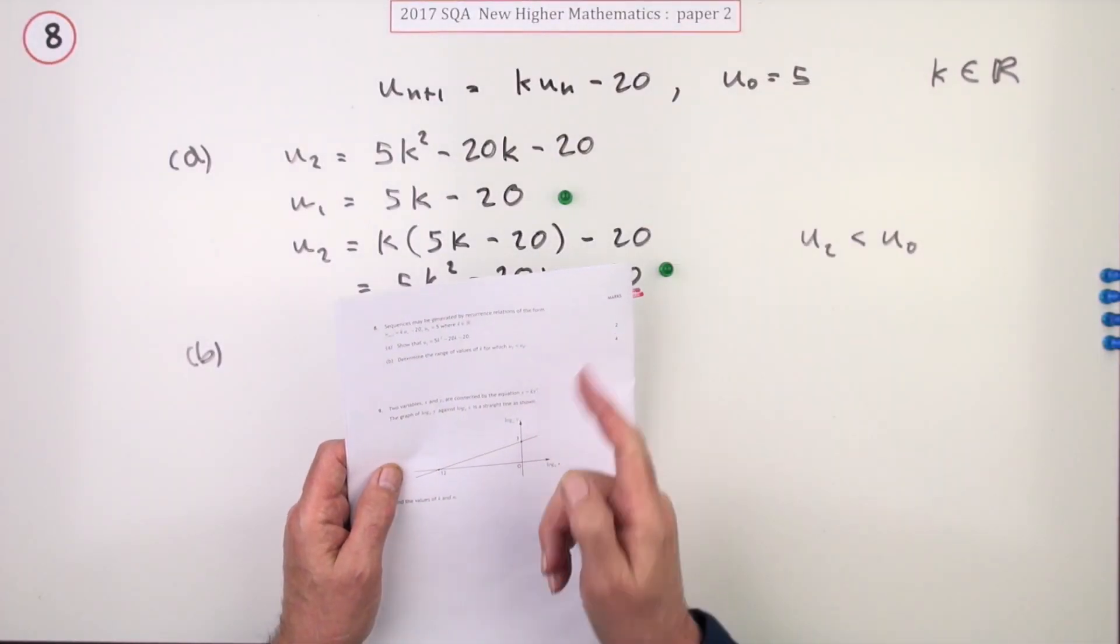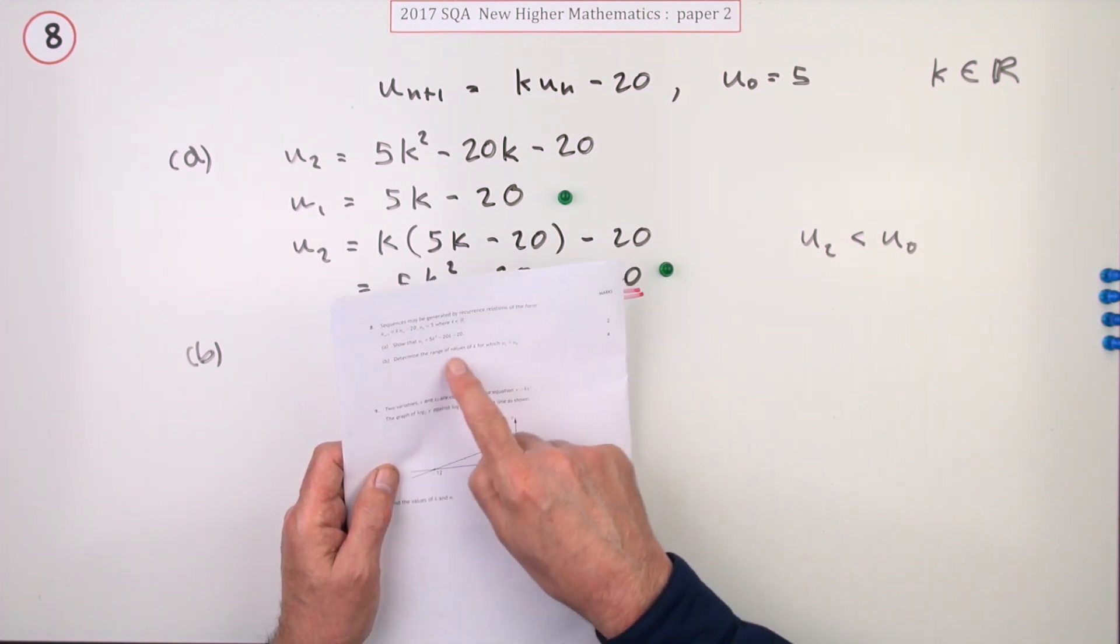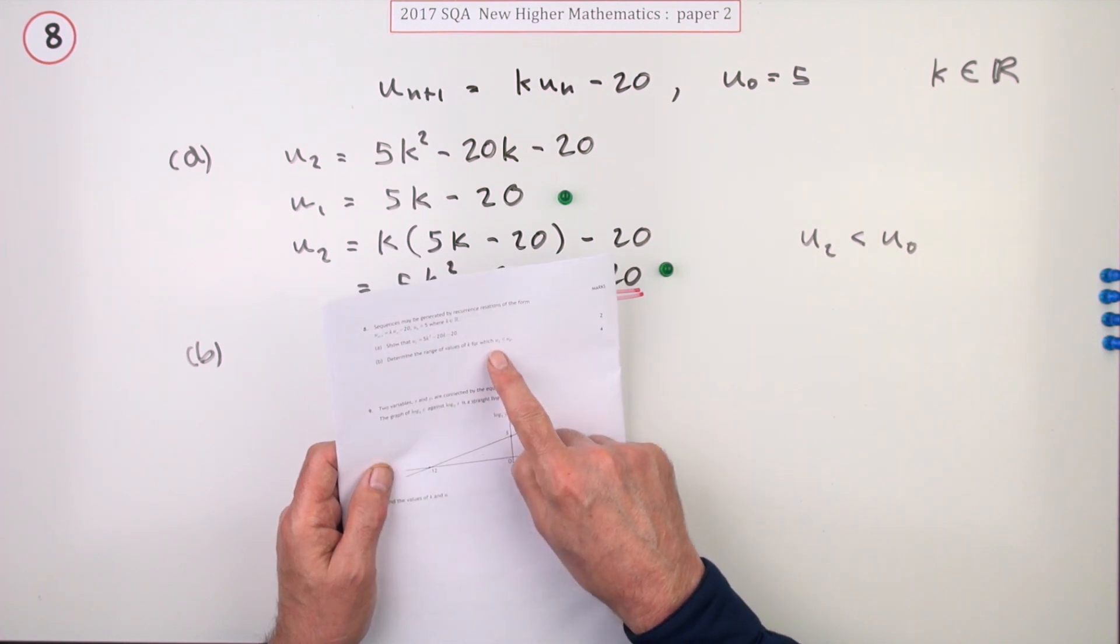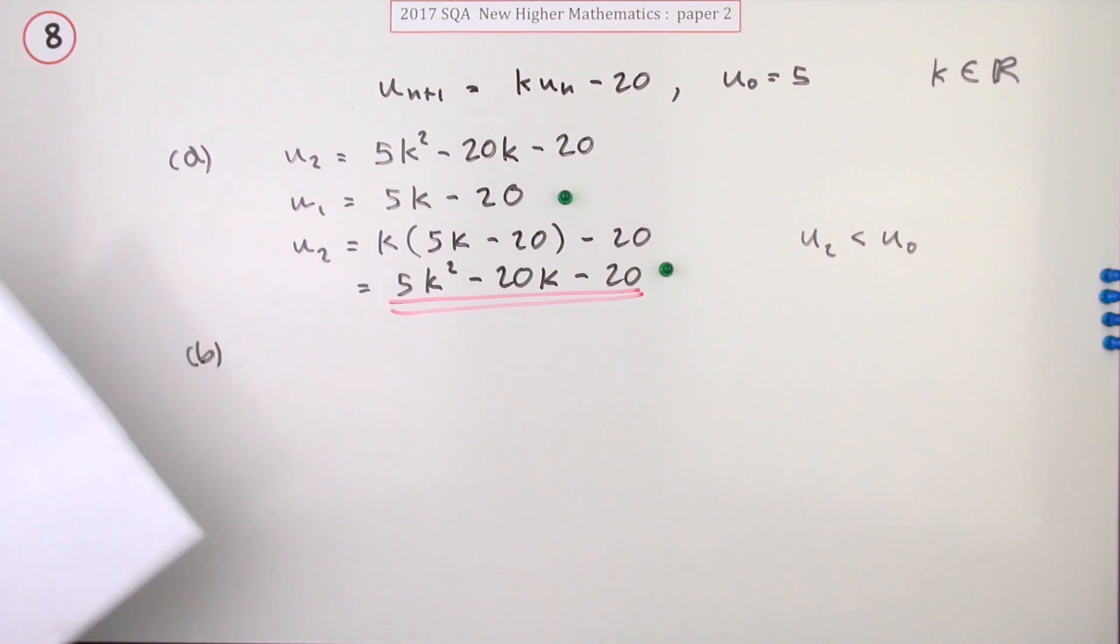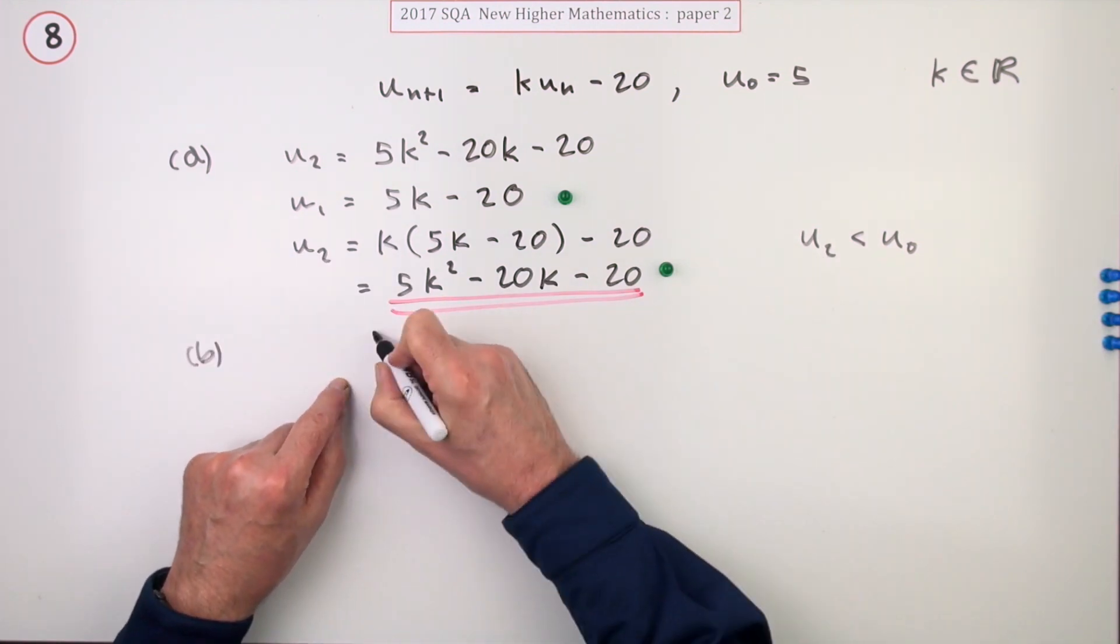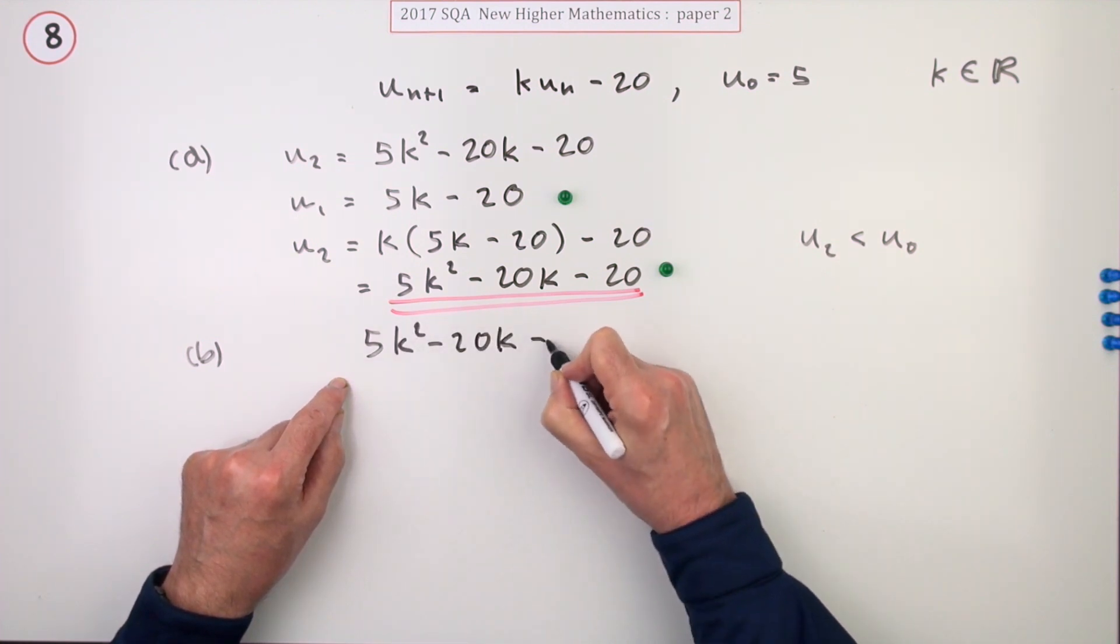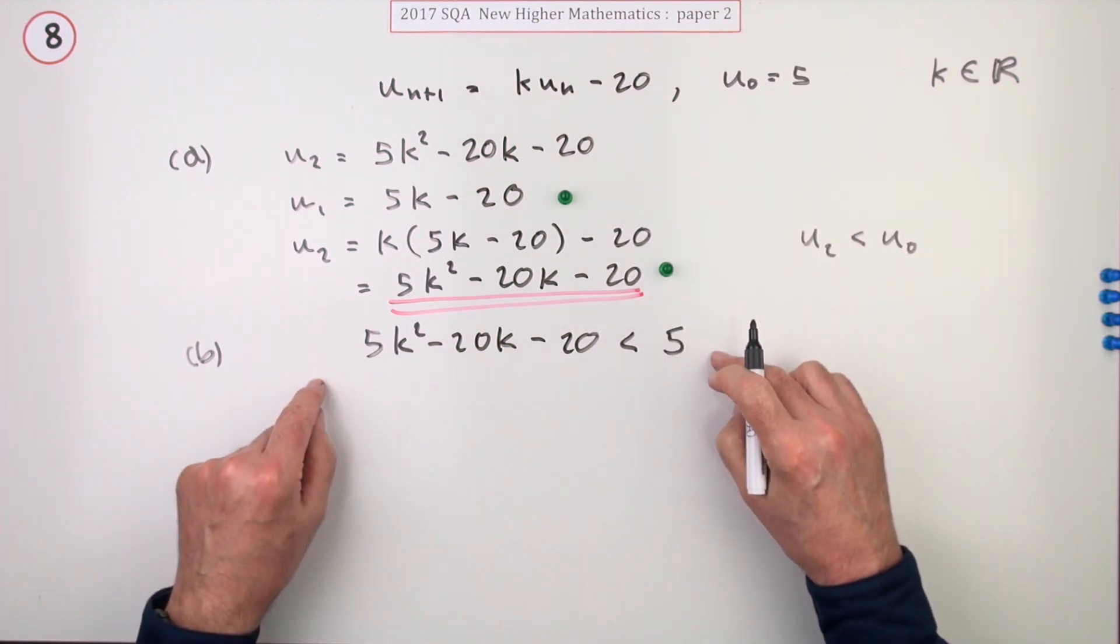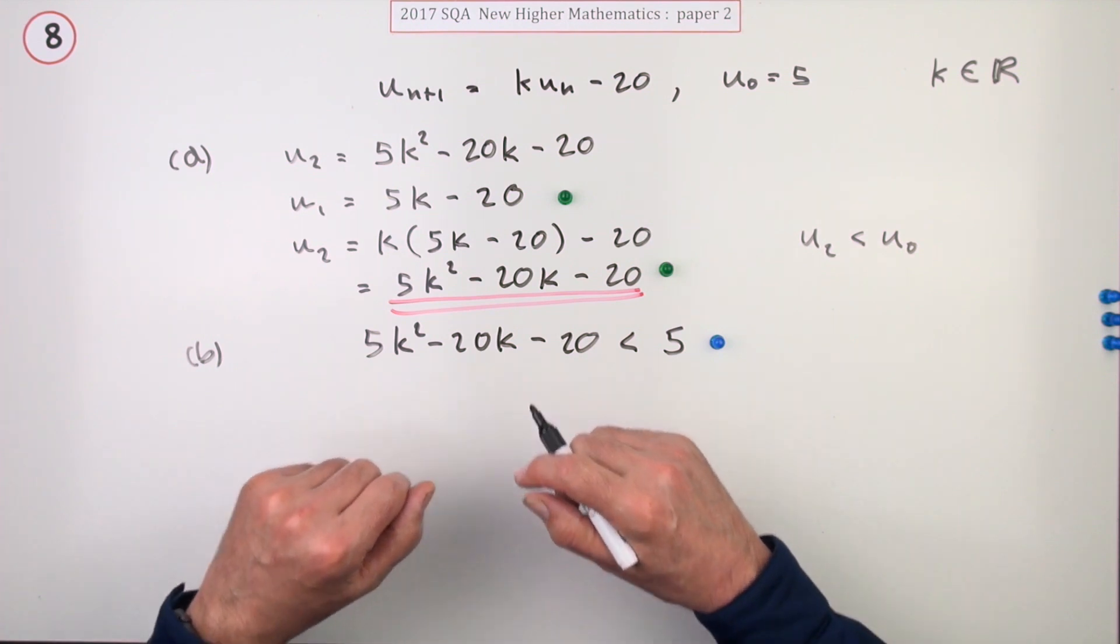Part b for four marks: determine the range of values of k for which u2 is less than u0. Well, just express that. There's u2: 5k squared minus 20k minus 20, and that's to be less than u0 which is 5. For doing that you get a mark.